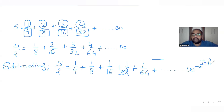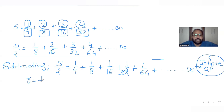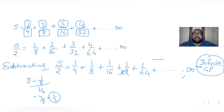This is now the sum of an infinite geometric progression. The common ratio r equals (1/8) divided by (1/4), which is 1/2. The first term a is 1/4. For an infinite geometric progression, the sum is given by a divided by (1 minus r), where a is the first term and r is the common ratio.